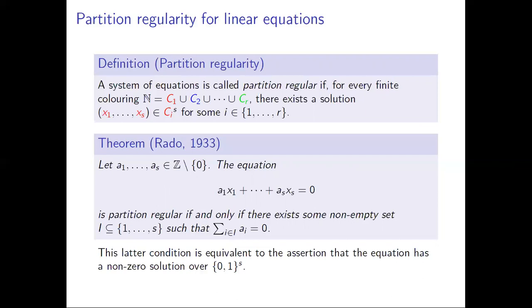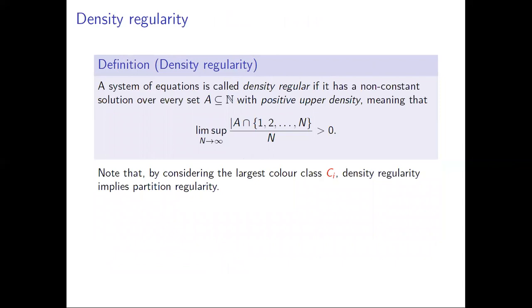More compactly, this latter condition is equivalent to the statement that the equation has a solution over {0,1}^s other than the obvious zero solution. So in Schur's theorem we have x+y=z, which has the solution 1+0=1, and so Rado's theorem immediately implies Schur's theorem.